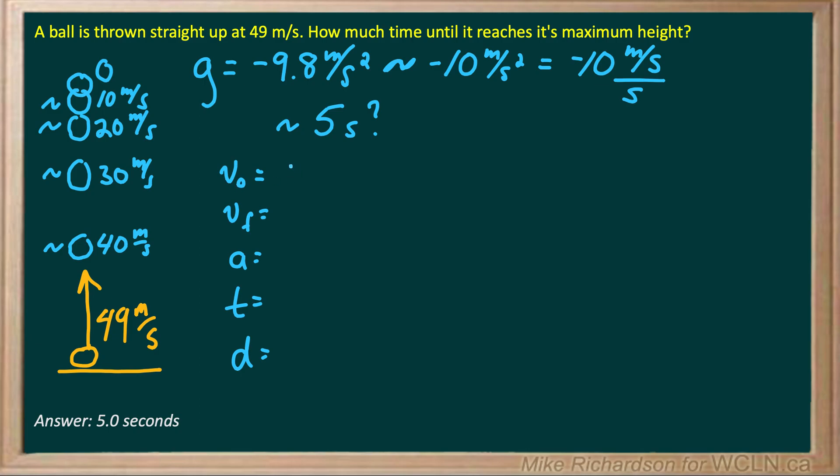V initial is up, so it's positive 49 meters per second. V final, when it reaches its apex, would be 0 meters per second at the peak. You have to sort of read between the lines to know that. My acceleration is negative 9.8 meters per second squared. Time is what we're looking for. I don't know D, so avoid equations with D in it.